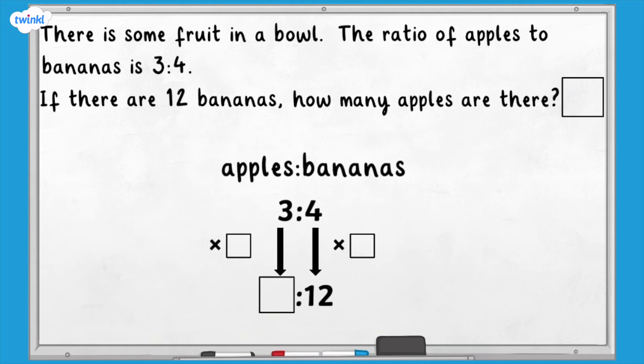This might help you answer the question. If we know what the number of bananas in the ratio has been multiplied by, we can multiply the number of apples in the ratio by the same amount to get our answer. Now, try and solve the problem if you haven't already got an answer.